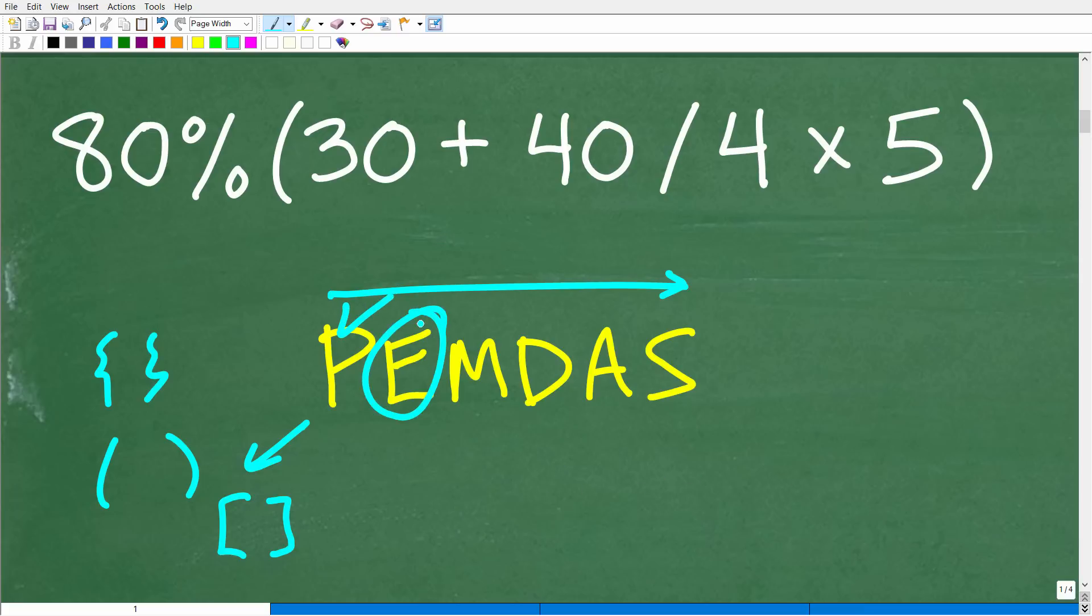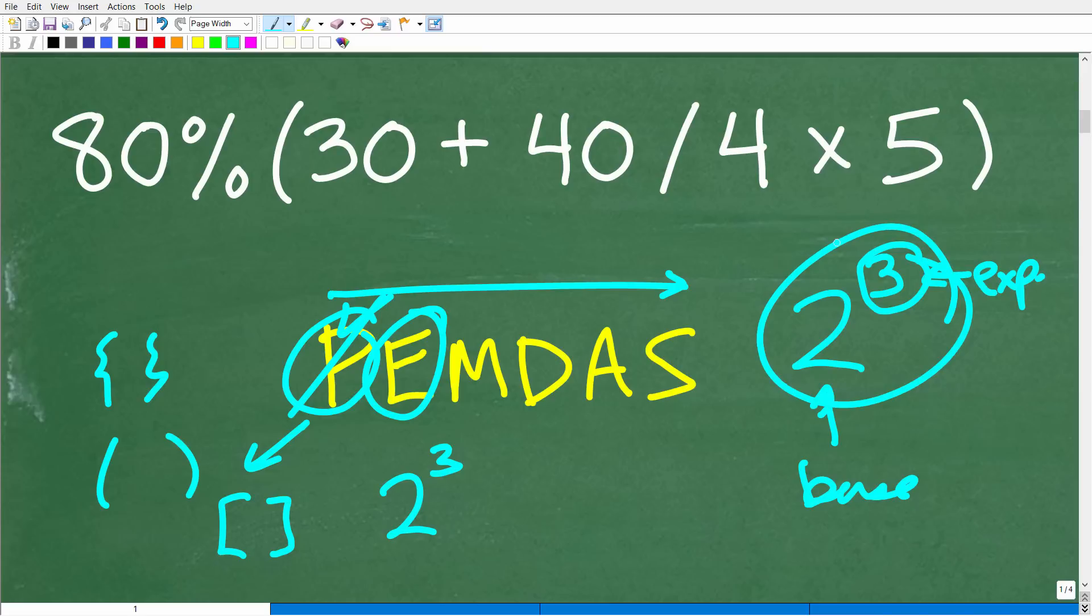How about E? E stands for powers, like 2 to the 3rd power. Someone might be saying, why don't they just put another P here if that's what it stands for? Well, really, the E stands for exponents. When you have a power like 2 to the 3rd power, the little number in the top right is called the exponent, and the big number down here is called the base. The entire thing is called a power. E stands for exponents, but you can think of this as powers.